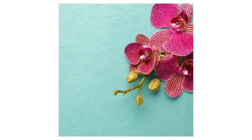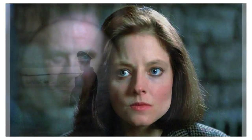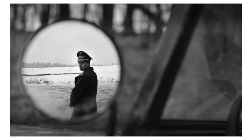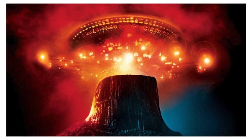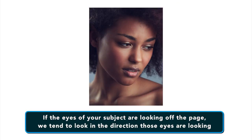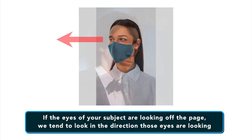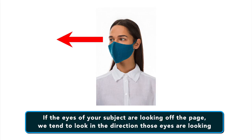Deliberately practice these concepts and they will soon become second nature while you're shooting. First thing to consider: faces and eyes. Our human brains are wired to look at faces and eyes first. If there's a face in your photo or scene, it will likely have more visual weight than the other elements. If you want the viewer to focus on something other than faces, consider not including them at all. If the eyes of your subject are looking off the page or out of frame, people tend to look in the direction the eyes are looking — we want to know what they are looking at.